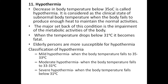The eleventh question is hypothermia. The decrease in body temperature below 35°C is called hypothermia. It is considered a clinical state of subnormal body temperature when the body fails to produce enough heat to maintain normal activities. The major setback is impairment of metabolic activities. When temperature drops below 31°C, it becomes severe. Elderly patients are most susceptible. Classification: mild hypothermia — body temperature between 35 to 33°C; moderate — 33 to 31°C; severe hypothermia — body temperature below 31°C.